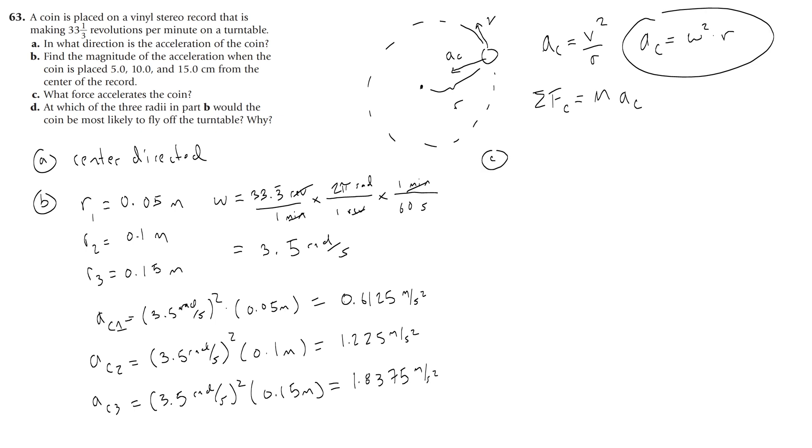Part C, wants you to recognize that the force of friction that is causing this, it's kind of, it's almost like a car on a road, it would be friction, because if the record were covered in oil or something slippery, then the penny would not go in a circle, it would just slide off. So you need friction, so friction is the centripetal force.